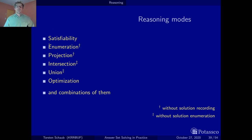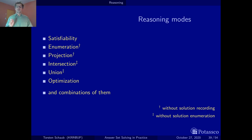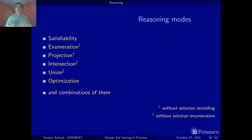Enumeration — I already mentioned that in Clingo, for instance, our system developed in Potsdam, you can give a parameter as an integer. If you say zero, you get all stable models that there are, and printing takes quite a time. Actually, the system may very quickly compute them, but printing is sometimes the bottleneck.